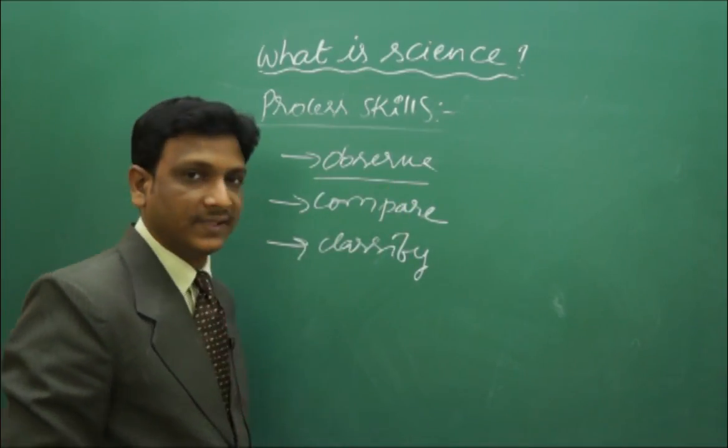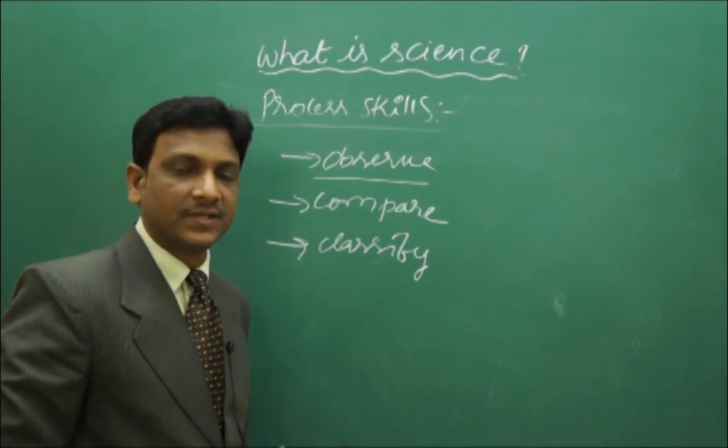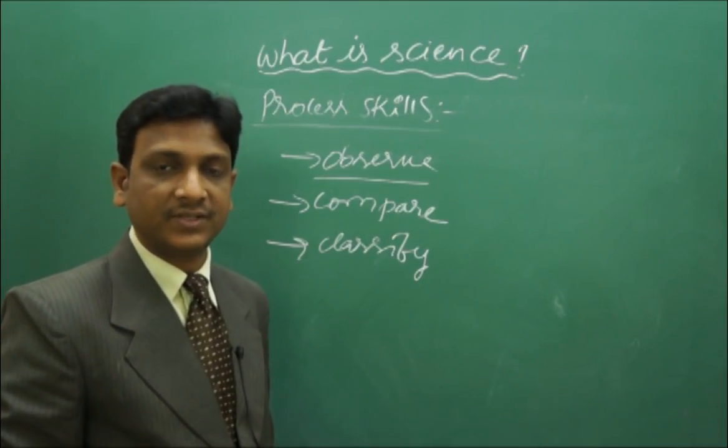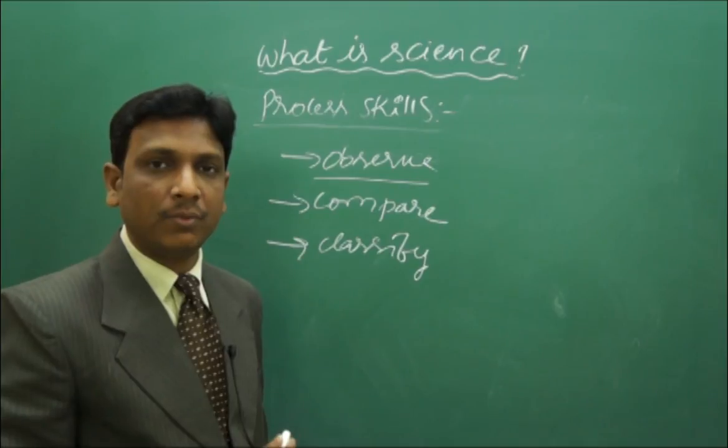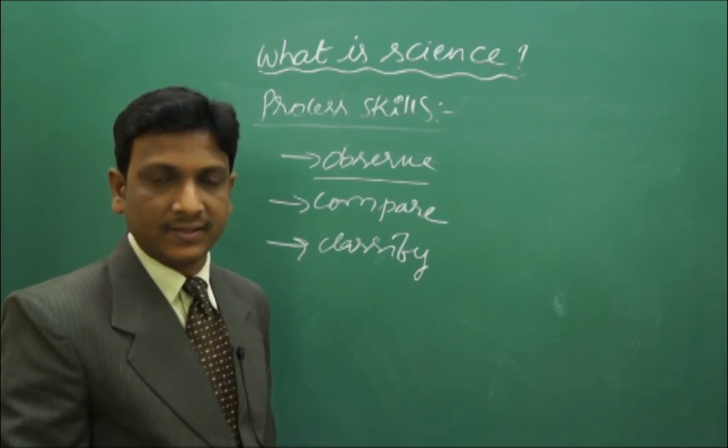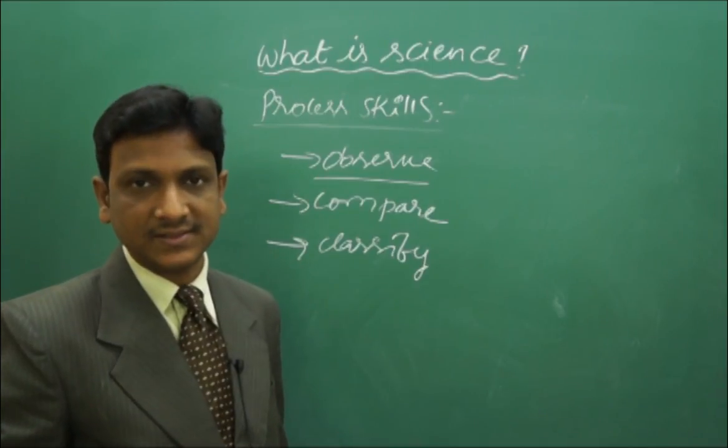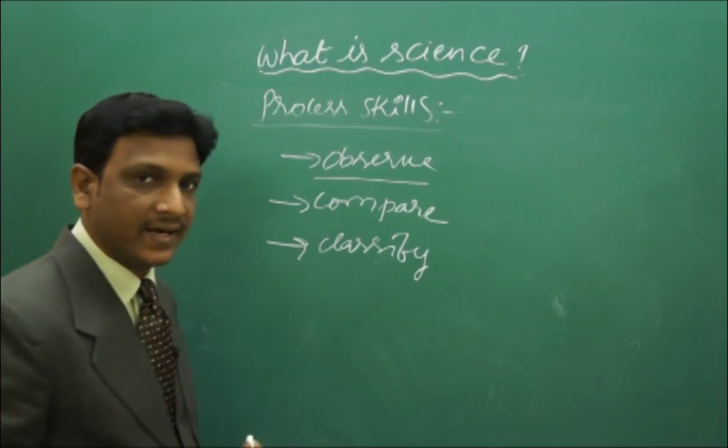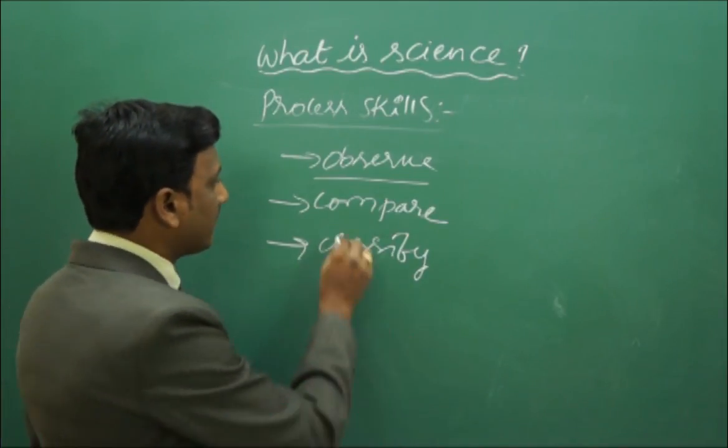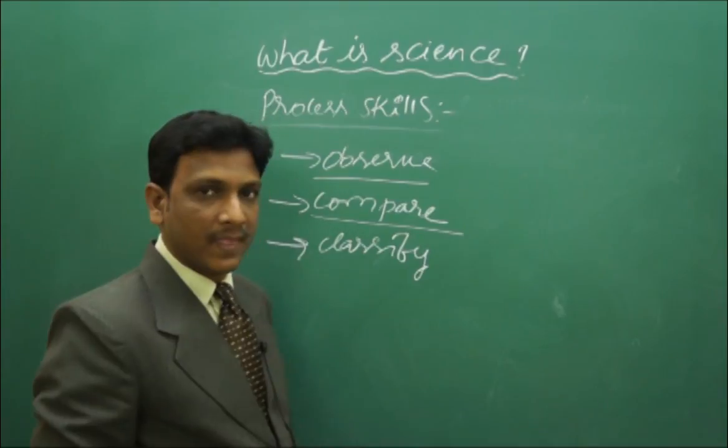Observe, compare, classify. First thing is observation which can be done with the naked eyes. We can observe the size, we can observe the shape. For example, a boy wanted to study different kinds of shells, so he can observe the shells with his naked eye, different shapes, their shape and color.